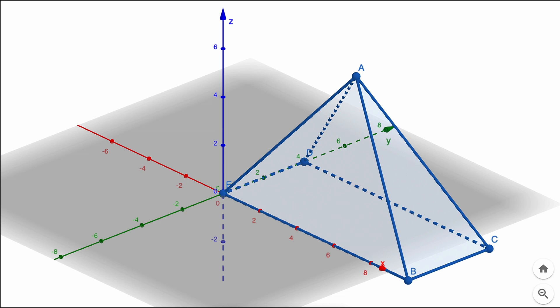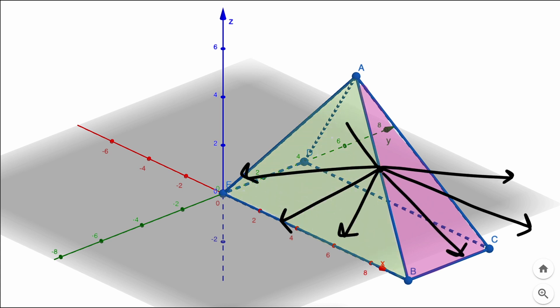Our general strategy for finding the angle is the same. We take two vectors off this edge that lie in these two adjacent planes. But there are a lot of vectors from this edge that lie in these two planes.